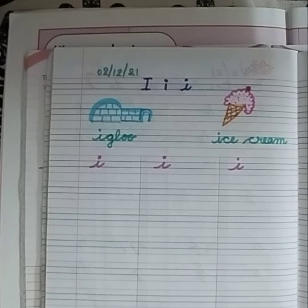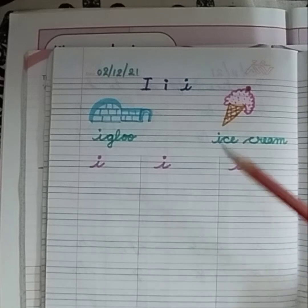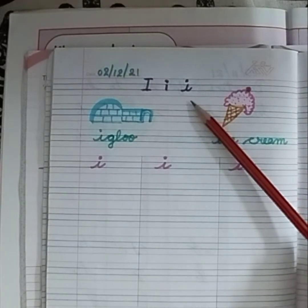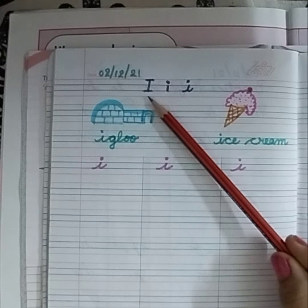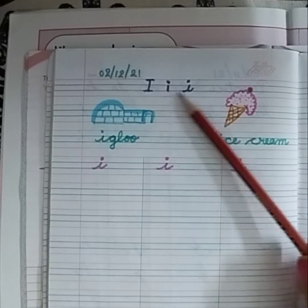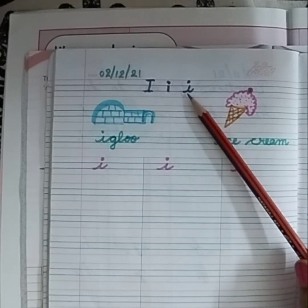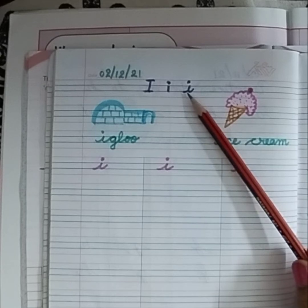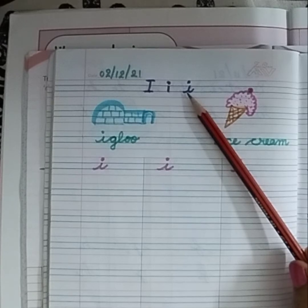In today's English class you are going to learn small cursive letter I. This one is capital letter I. This is small letter I, and this one is small cursive letter I — so today you are going to learn this one, and how to write it. We will also read the words with the I sound from the Fun with English book.